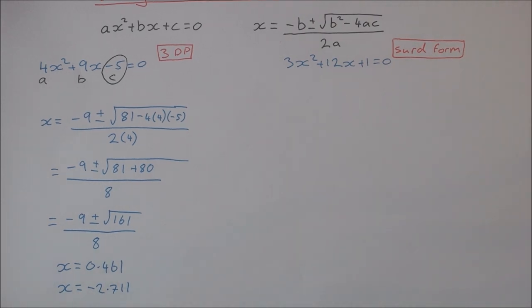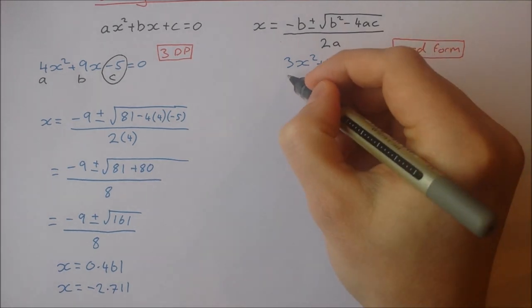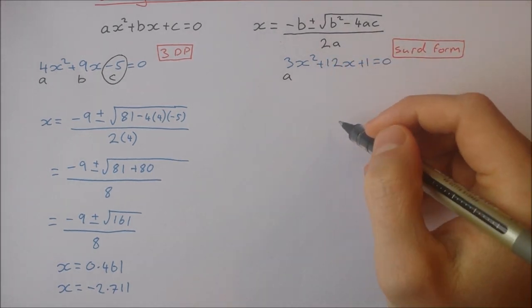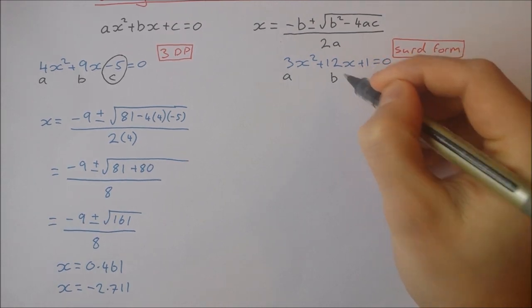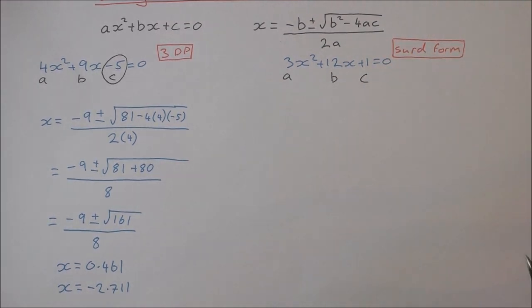Okay, in the next example, I'm going to leave the answer in surd form. So let's first of all start by writing out what my a, b, and c is. So in this case a is 3, b is 12, and c is 1.